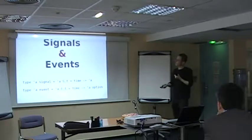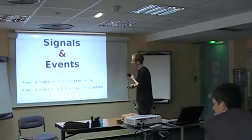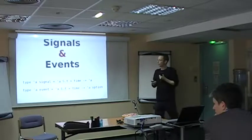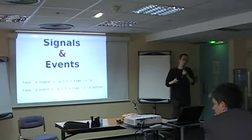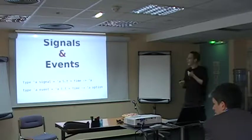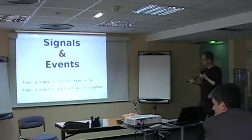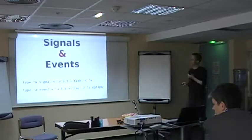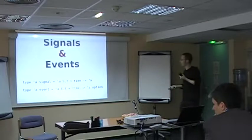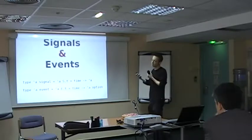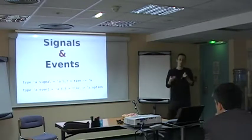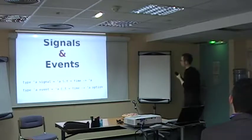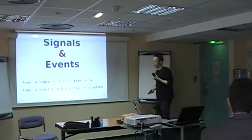The other thing that we introduce are events. And events represent values that have values only at a certain point in time, which we call occurrences. And you can see them as functions that go from time to an option type. And if I give you the current time and you apply the function, then if you get none, there's no occurrence. And if you get some, then there's an occurrence. Examples of events are maybe the response of a server or a mouse click.